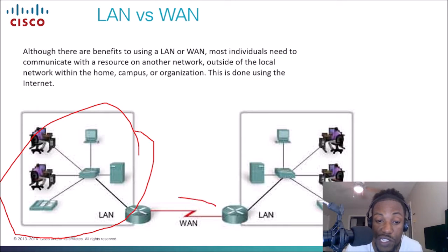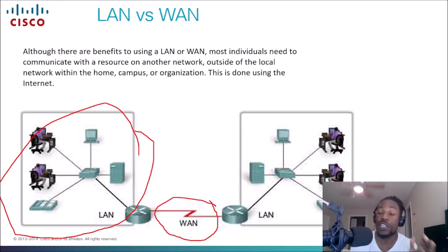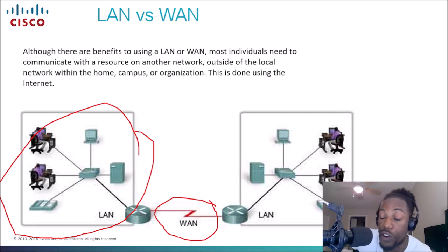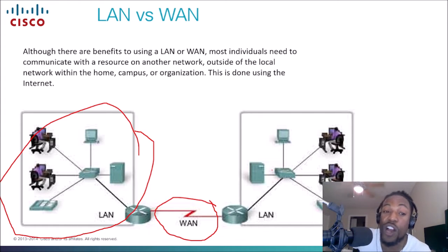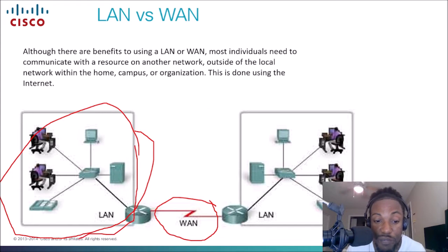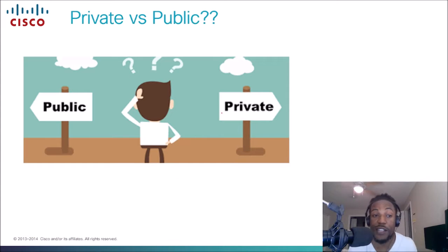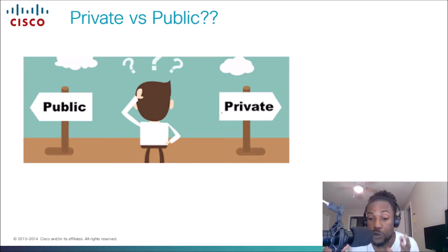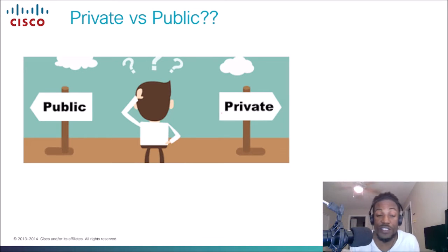As opposed to a WAN, which is usually outside of your local area network — the wide area network — which is really represented by the Internet. Anything outside of your organization or your house would be considered the wide area network. Anything beyond your demarcation point is the WAN.